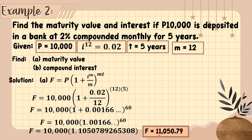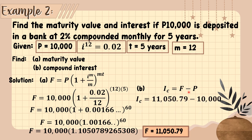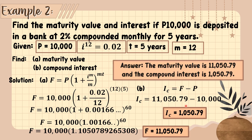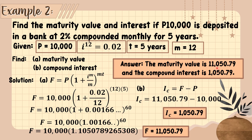Multiplying 1.10507892653̄08 by 10,000 gives a maturity value of 11,050.79. The compound interest is 11,050.79 minus 10,000, which equals 1,050.79. Therefore the maturity value is 11,050.79 and the compound interest is 1,050.79 pesos.